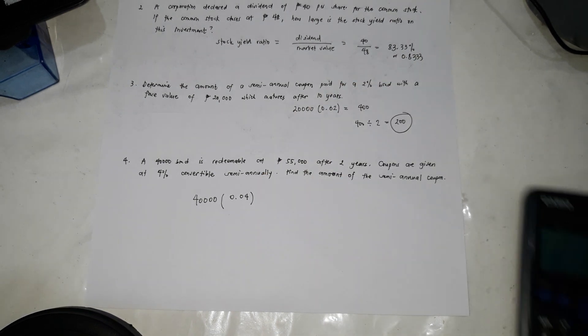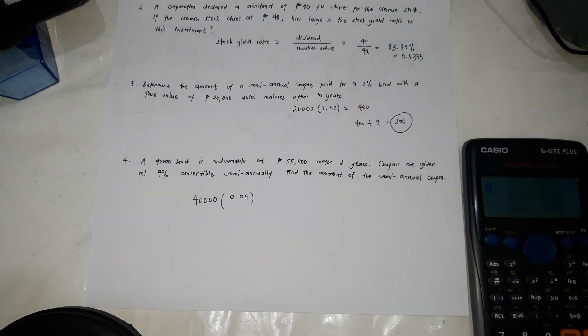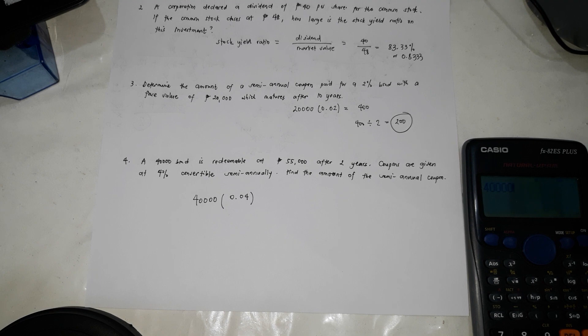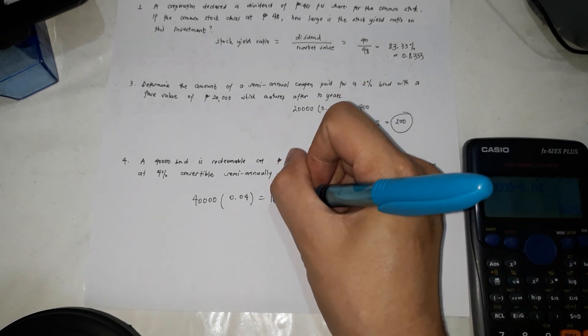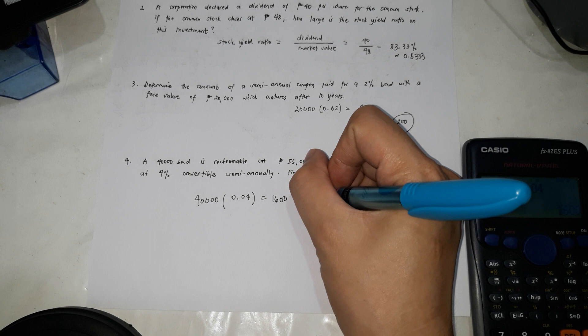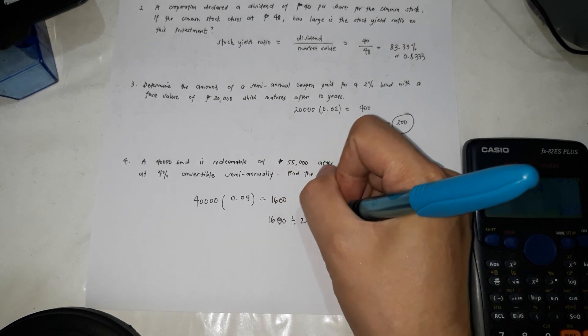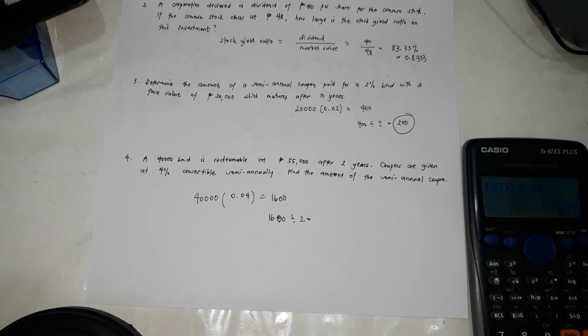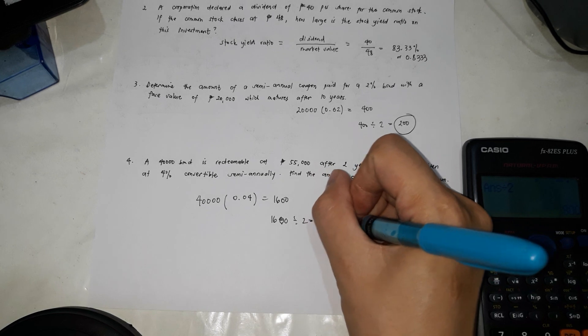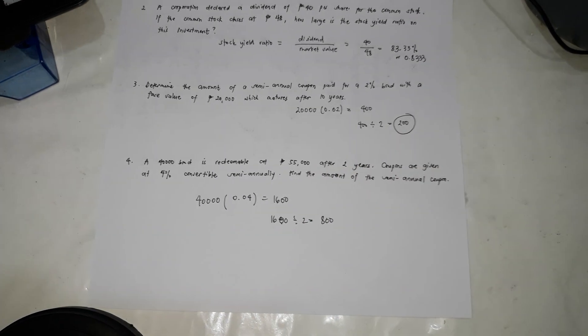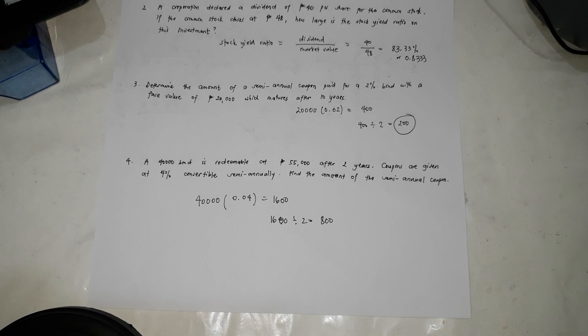So 40,000 multiply by 0.04. That's 1,600. Just divide it by 2, 1,600 divided by 2, that's 800. So the answer is 800. So that's how you're going to solve problems involving stocks and bonds. Thank you.